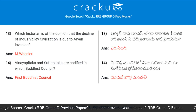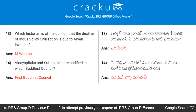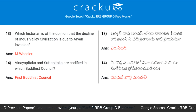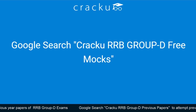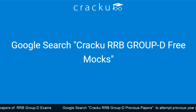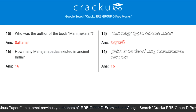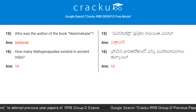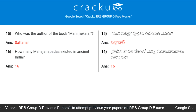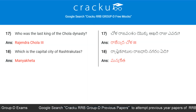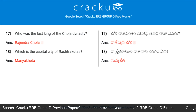Which historian is of the opinion that the decline of Indus Valley civilization is due to Aryan invasion? Answer: M. M. Wheeler. Vinaya Pitaka and Sutta Pitaka are codified in which Buddhist council? Answer: First Buddhist Council. Who was the author of the book Manimekalai? Answer: Sattanar. How many Mahajanapadas existed in ancient India? Answer: Sixteen. Who was the last king of the Chola dynasty? Answer: Rajendra Chola III.